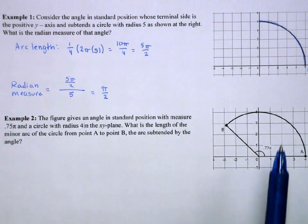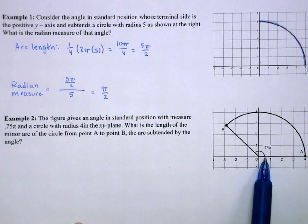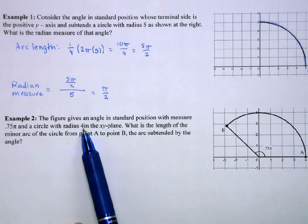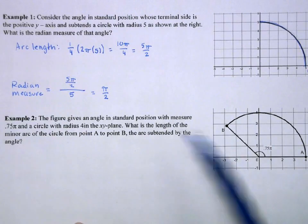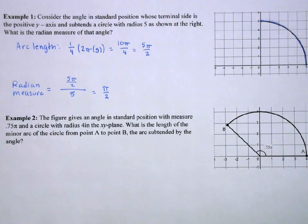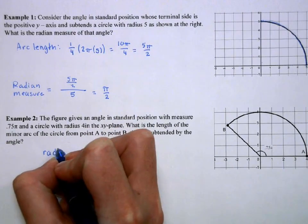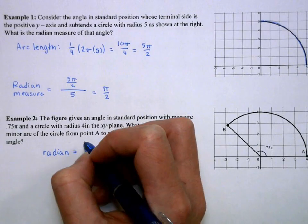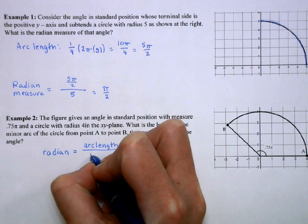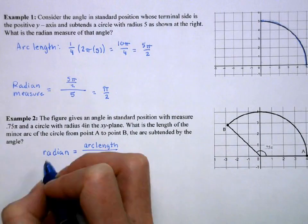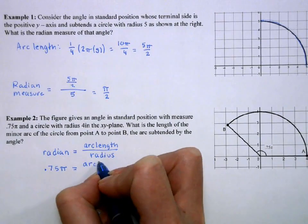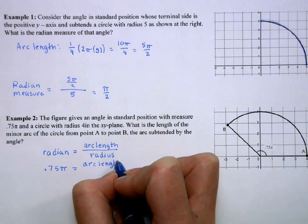Okay, our next example. We have a figure that gives an angle in standard position, where the measure is 0.75π. So, this is giving us the radian measure. The circle has a radius of 4. We want to know the length of the minor arc. So, we're finding the arc length given this information. Well, our radian measure is equal to the arc length over the radius. We have 0.75 for my radian measure. My arc length is what we're trying to find, over my radius of 4.